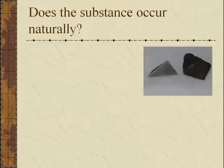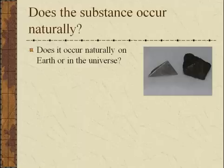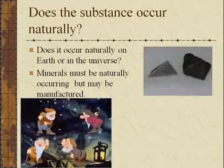The next question: does the substance occur naturally? It's important to understand that this means naturally on the earth or anywhere else in the universe. Sometimes minerals may form, such as this meteorite, in the far reaches of space. Minerals must be naturally occurring, but may also be manufactured.